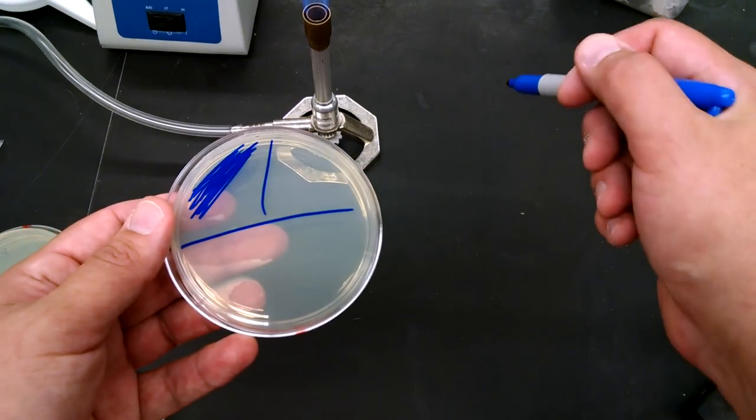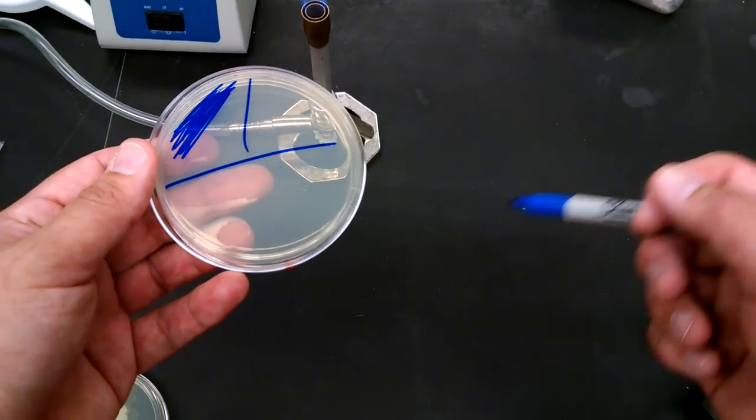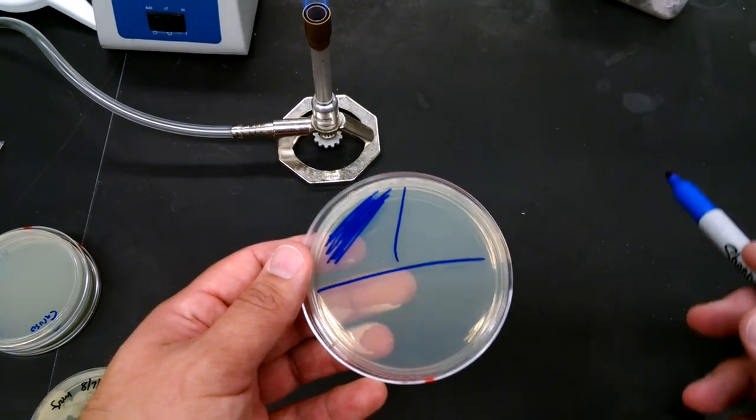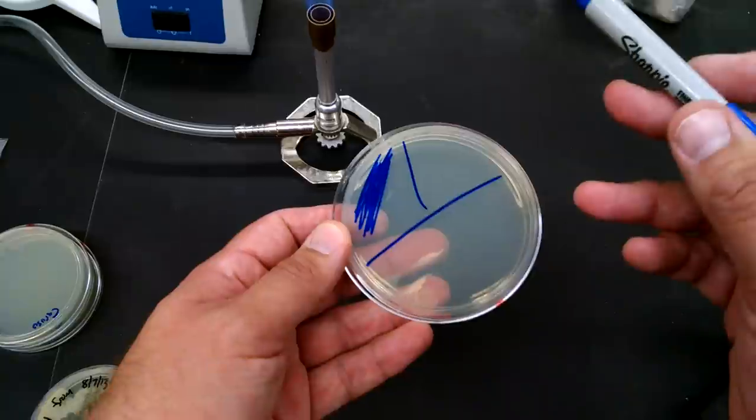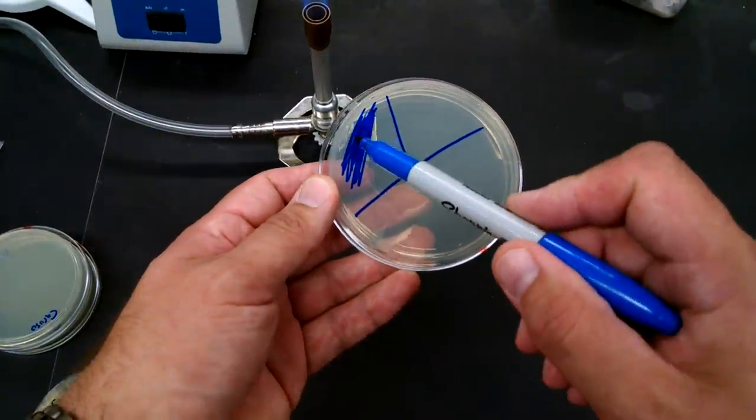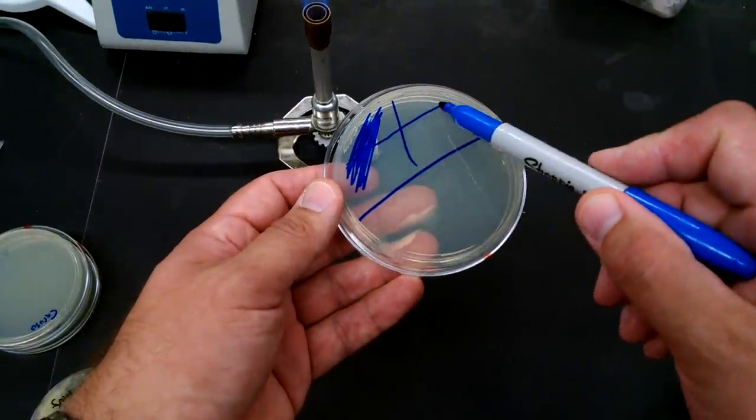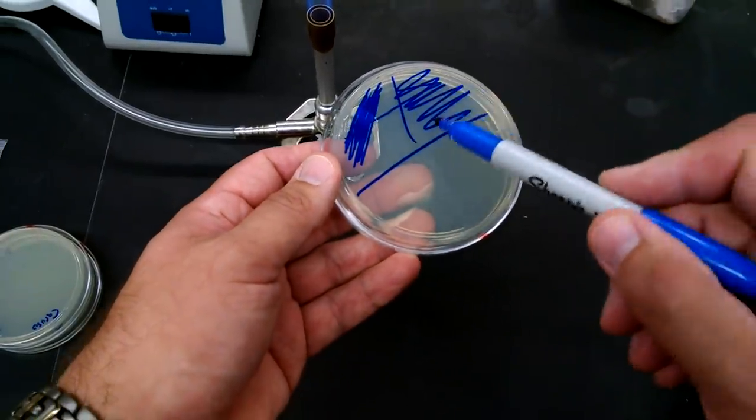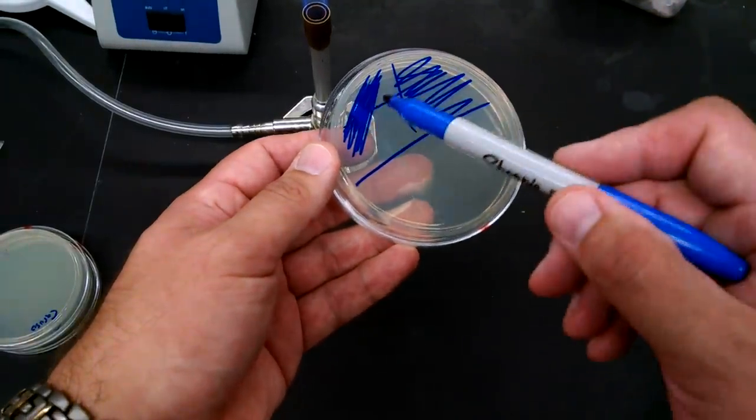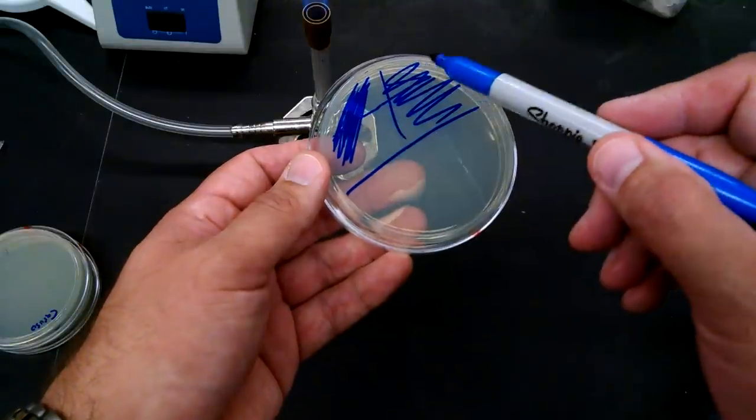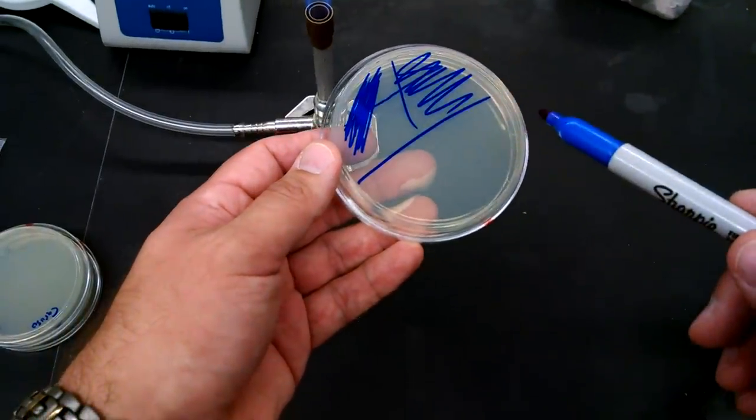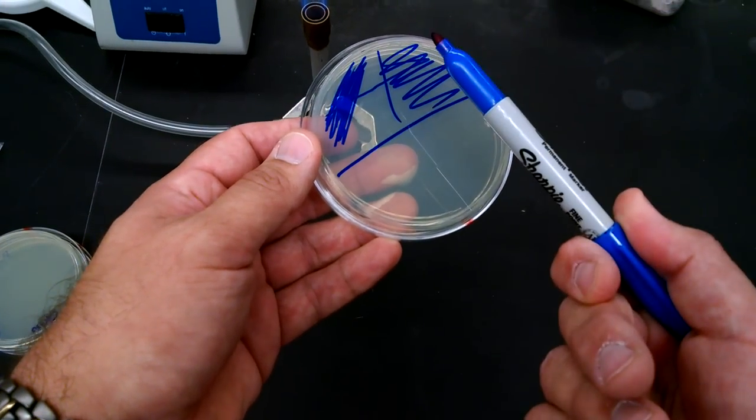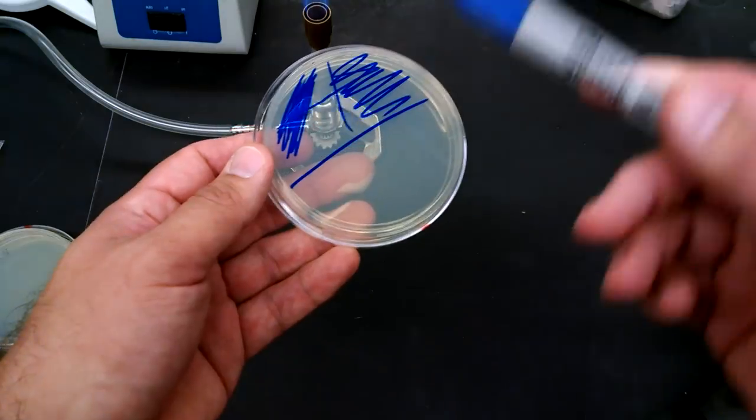Then you're going to either reflame your loop if it's a metal loop, or toss that now contaminated loop away and grab a new one. You're then going to take this new loop and drag it through the sample and then spread that little bit that you took from here into that new region. And so what you've done is you've just diluted a little bit of this and spread it out. That's a dilution, right? You can either flip the loop over and use the clean side of it or toss it and get a new one.